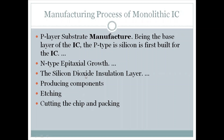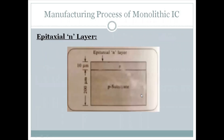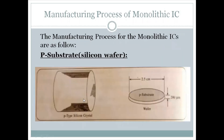The first step is P-substrate manufacturing. P-substrate silicon wafer — this is the P-substrate material. The first step of manufacturing processing is P-substrate silicon wafer. This is the first step of making a monolithic IC.